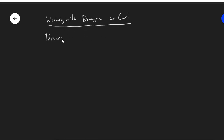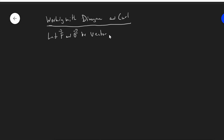What I mean by this is how does the del operator interact with scalars? Let F and G be differentiable vector fields, and let C be a scalar.